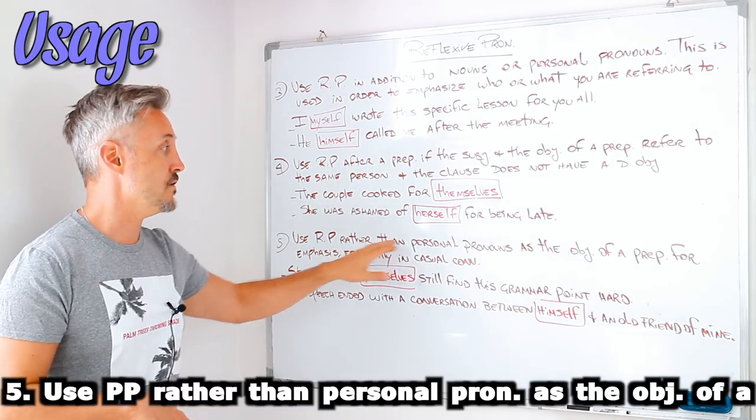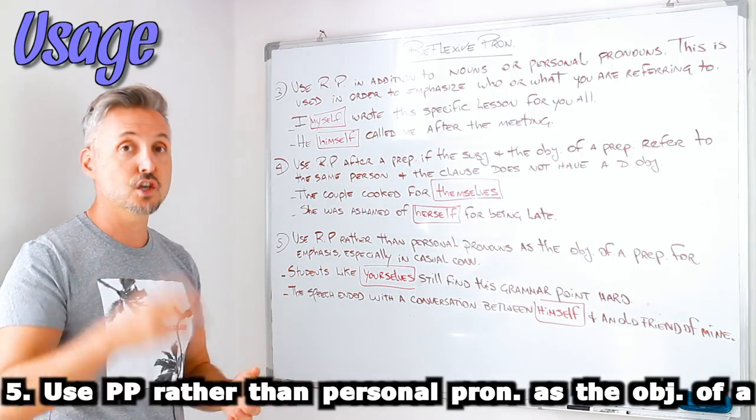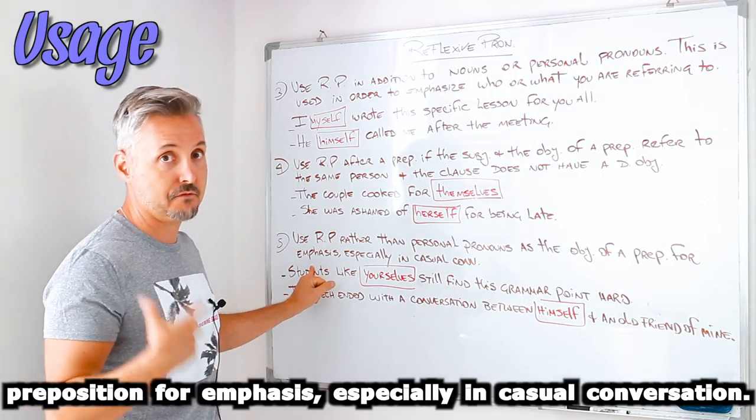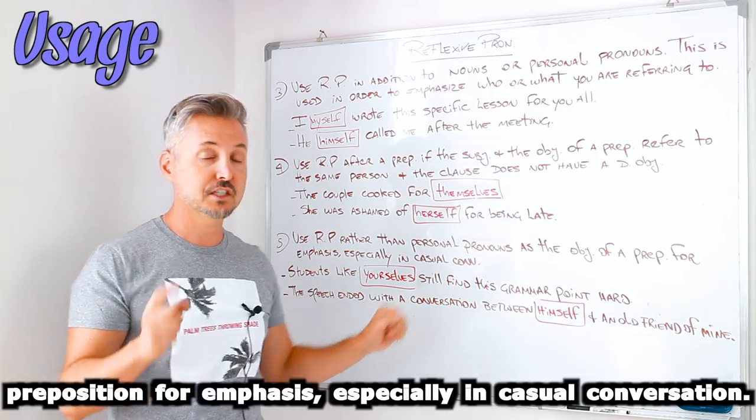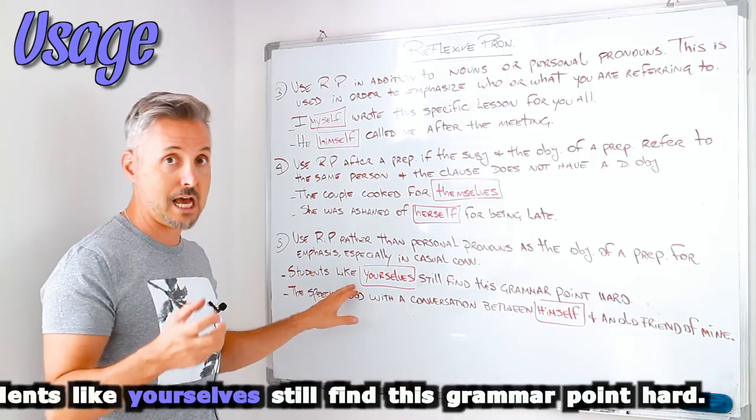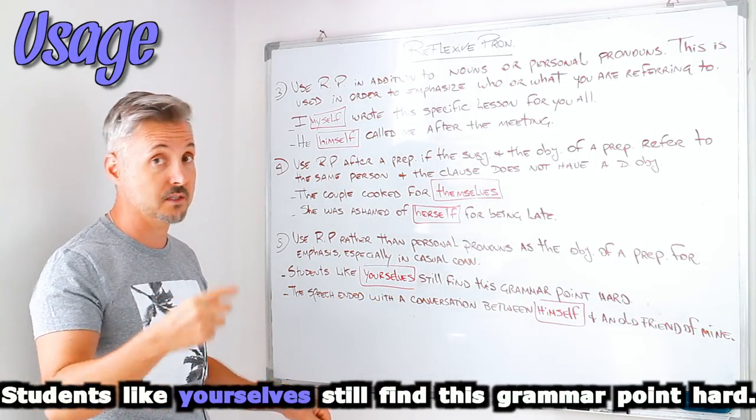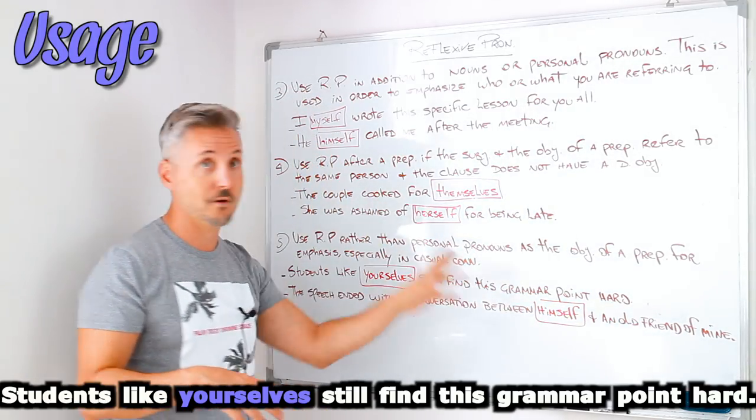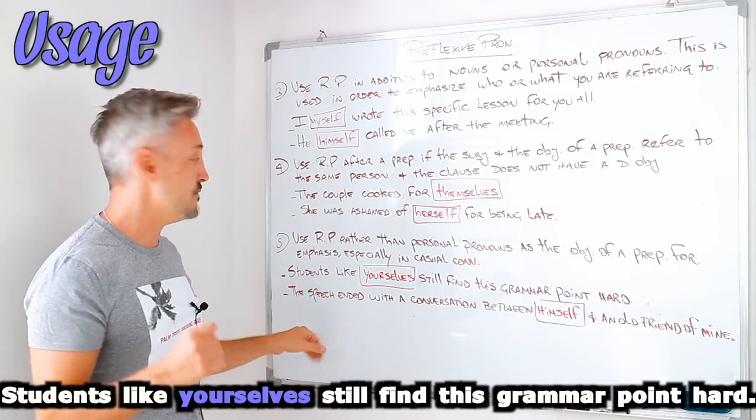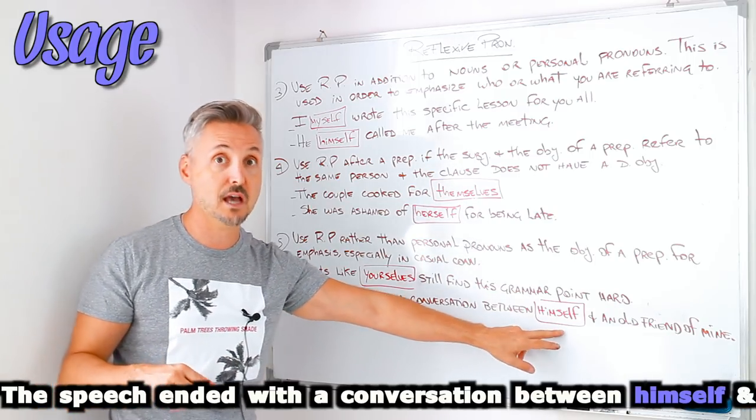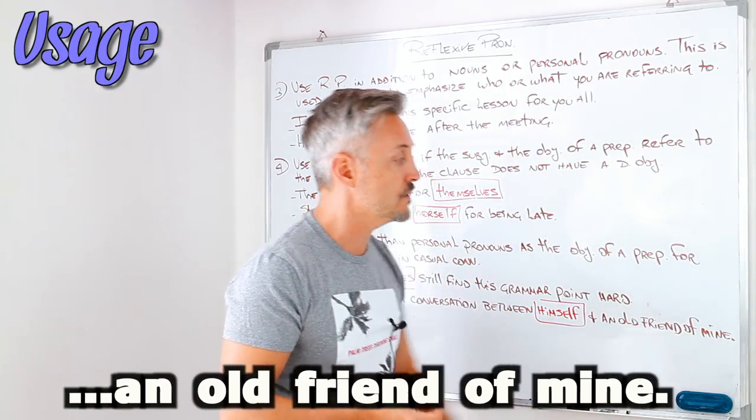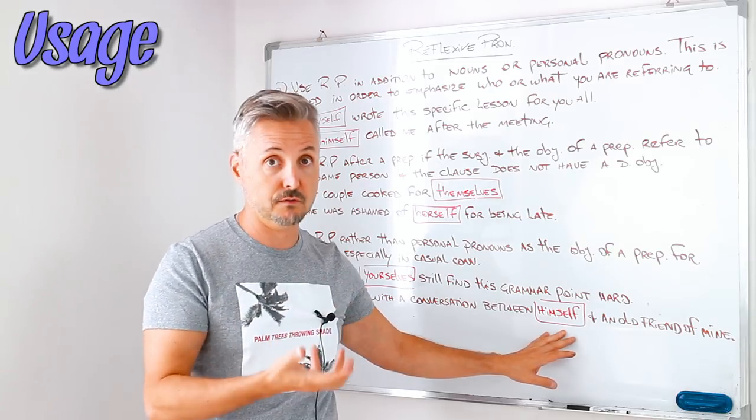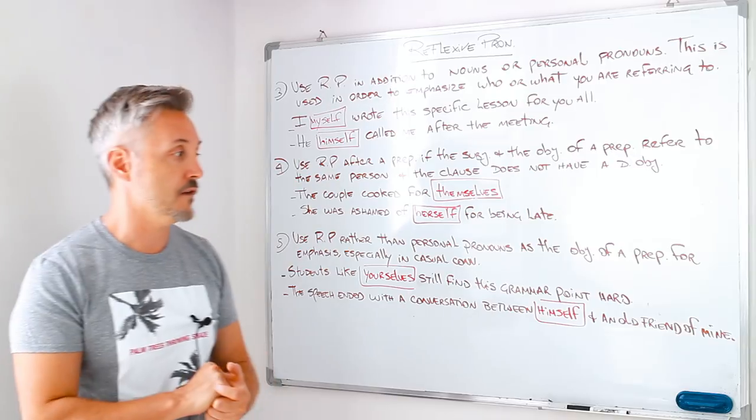Now, for number five, use reflexive pronouns rather than personal pronouns, as the object of a preposition for emphasis. Again, for emphasis. Especially in casual conversation. Just like my introductory example. Students like yourselves, and here is plural, yourselves, because they are not just one but many. Students like yourselves still find this grammar point hard. The other example that I wrote, the speech ended with a conversation between himself, so somebody, himself, and an old friend of mine. And here we have himself and somebody referring to he, obviously. He and an old friend of mine.